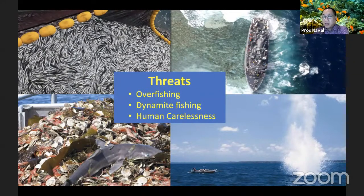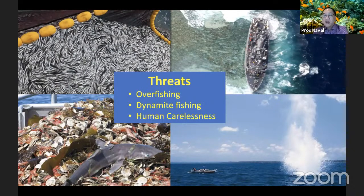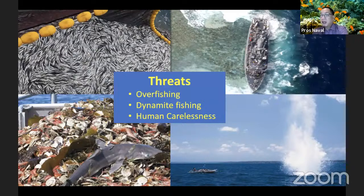For example, overfishing, dynamite fishing, and human carelessness all endanger marine sustainability, which affects not only the balance of life in our ocean, but also the social and economic well-being of communities that depend on the sea for their livelihood.